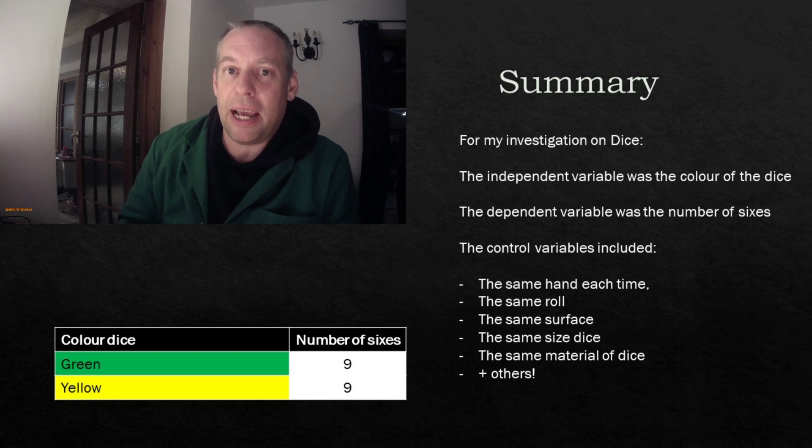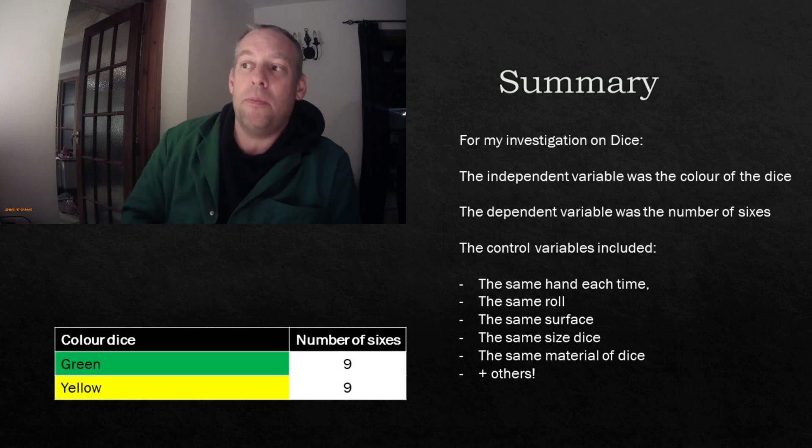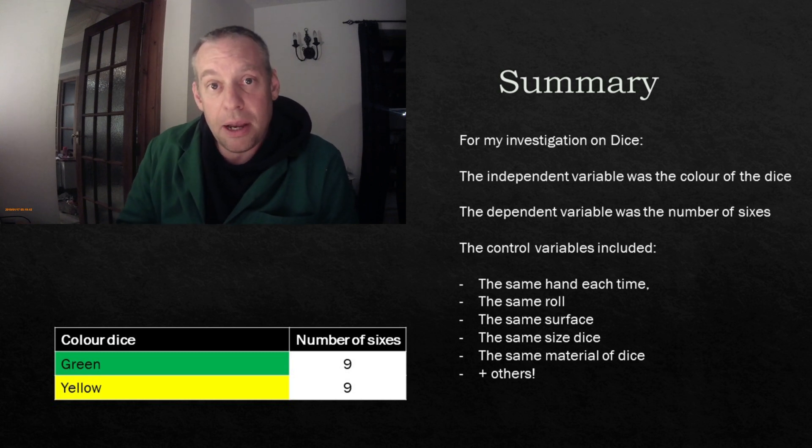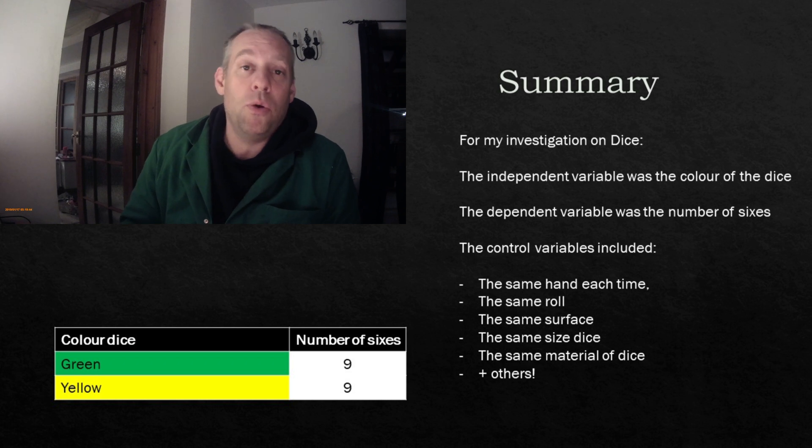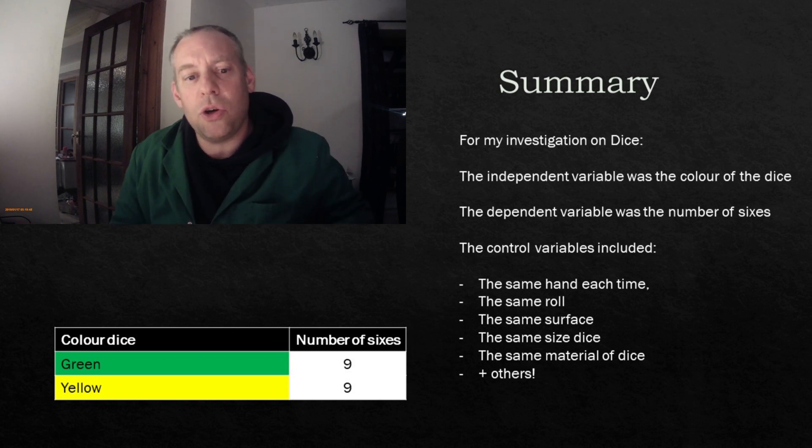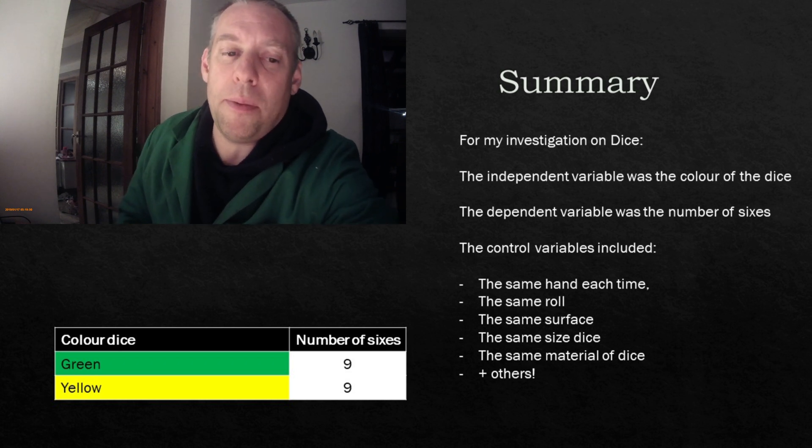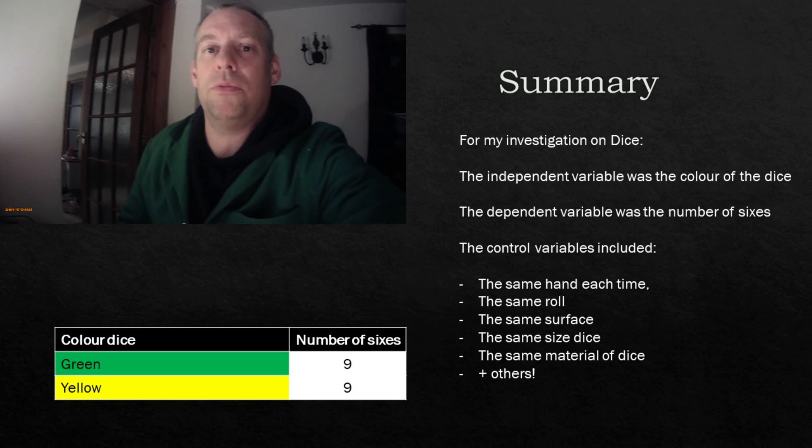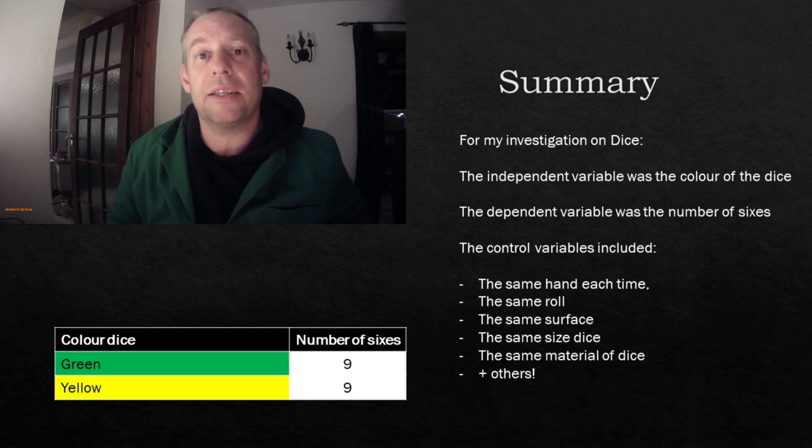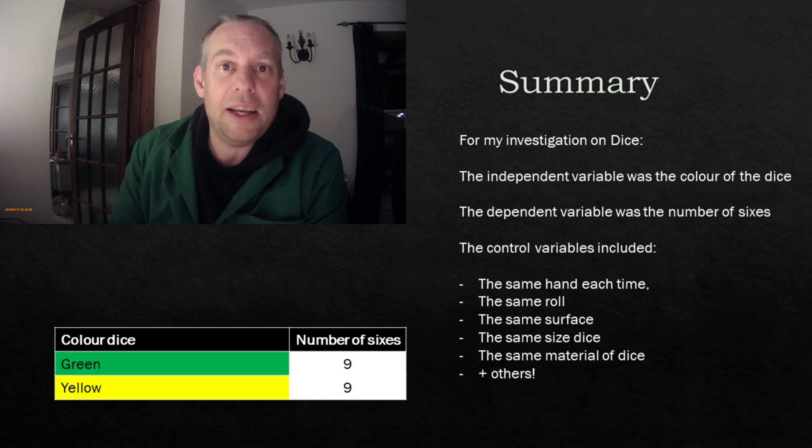For this experiment, for this investigation, I asked us to investigate dice. We decided that the independent variable was going to be the colour of the dice, and that the dependent variable was the number of sixes. We then decided on control variables, and there was a whole load that we came up with, and I've listed some at the side, and you can kind of see them as you roll down. So, that summarises what I want you to learn.